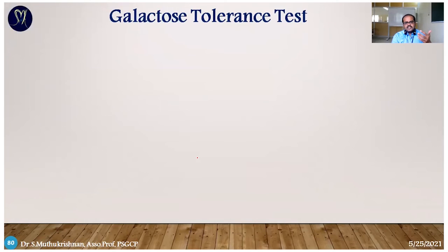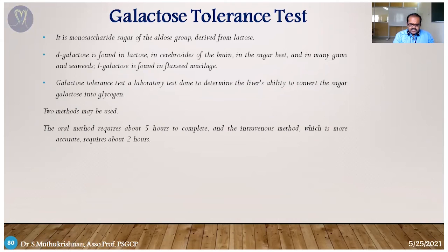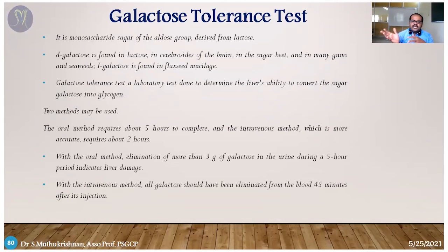The galactose tolerance test determines whether a person can metabolize galactose. Galactose must be converted into other products; if not, the person has galactose intolerance. The test is given either orally or intravenously. In the oral method, if more than 3 grams of galactose is excreted in urine within five hours, it indicates liver damage. In the intravenous method, galactose should be eliminated within 45 minutes — if not, there is impairment of galactose metabolism.